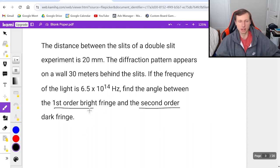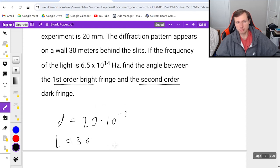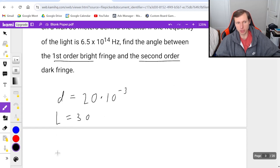Okay, here's what I'll do. First, I'll see what variables they give me. The distance between the slits: d = 20 mm = 20 × 10^-3 m. The wall is 30 meters behind the slits, so L = 30 m.